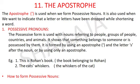The apostrophe is used when we form possessive nouns. It is also used when we want to indicate that a letter or letters have been dropped while shortening a word or while we are writing a short form. The possessive form is used with nouns referring to people, groups of people, countries, and animals. It shows that something belongs to someone — is possessed by or owned by them. It is formed by using an apostrophe and the letter S after the noun, or by using only an apostrophe.